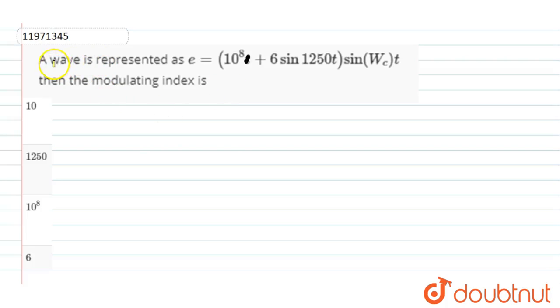In this question, what happened? The wave is represented as e is equal to 10 to the power 8 plus 6 sin 1250t sin omega ct.